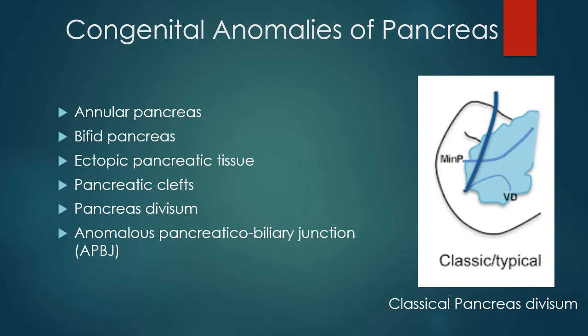Pancreas divisum represents a variation of pancreatic ductal anatomy which results from failure of fusion of the dorsal and ventral pancreatic anlages. In the majority of cases, it is characterized by the dorsal pancreatic duct — the main duct and the Santorini duct — directly entering the minor papilla with no communication with the ventral duct. Thus, the dorsal pancreatic duct drains most of the pancreatic glandular parenchyma via the minor papilla.